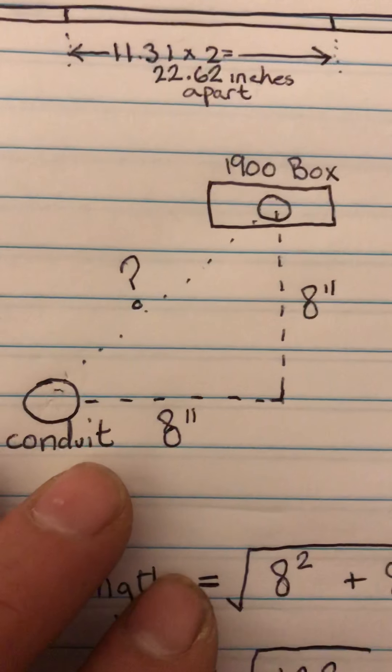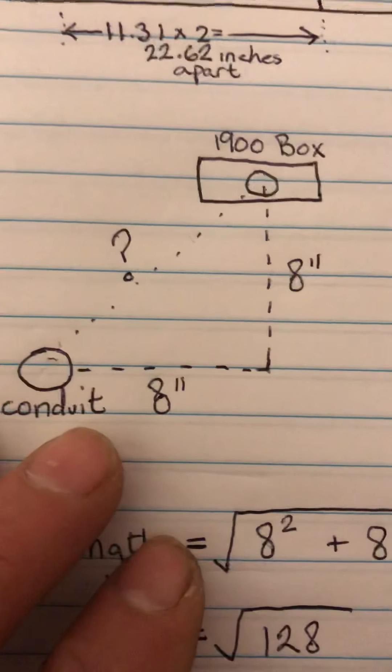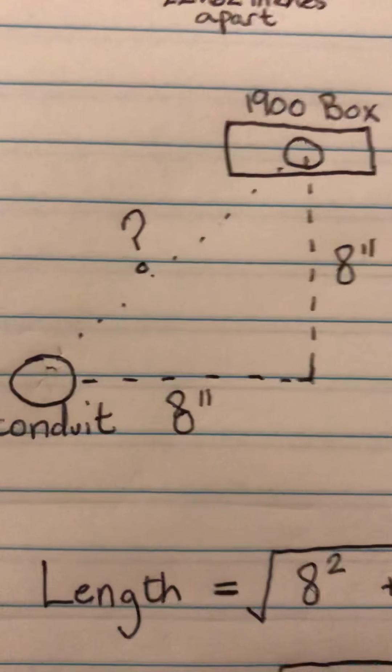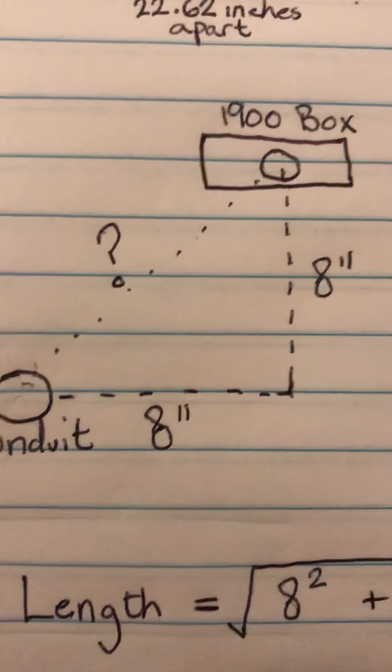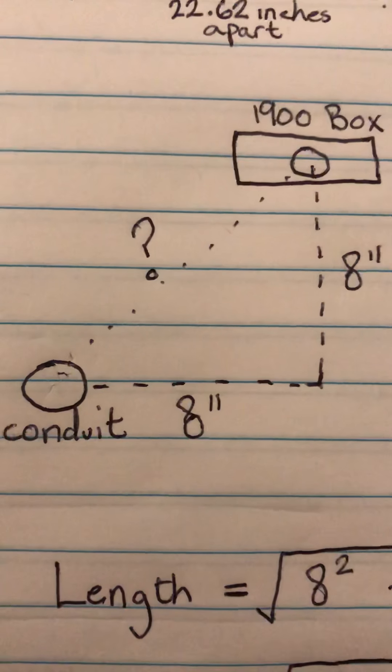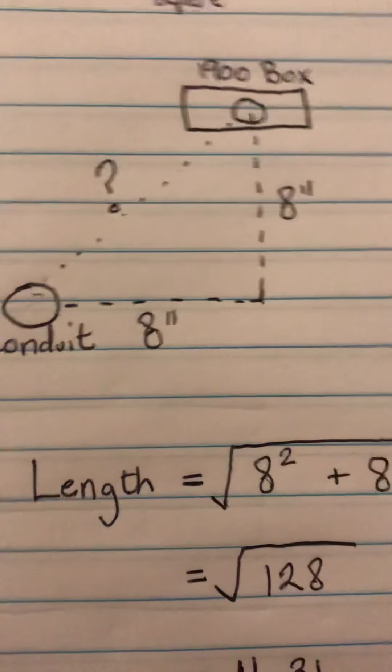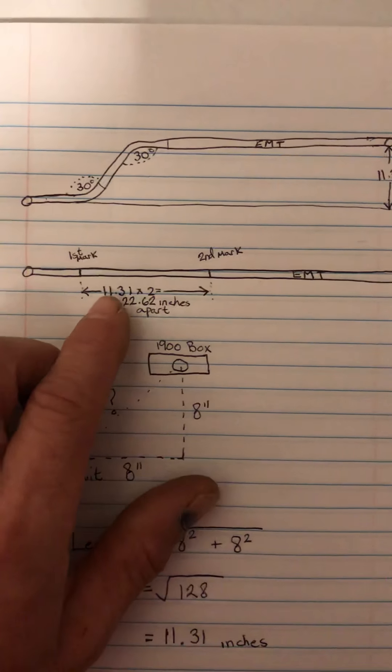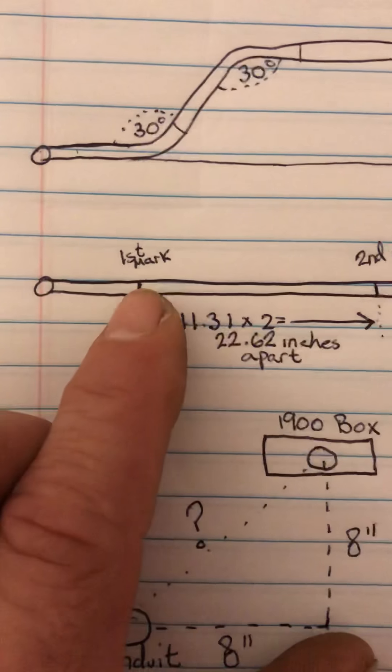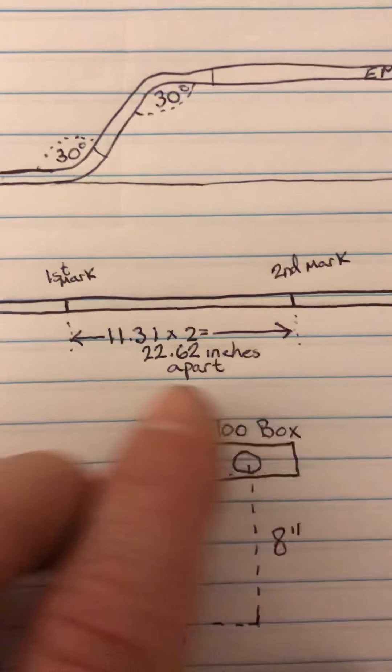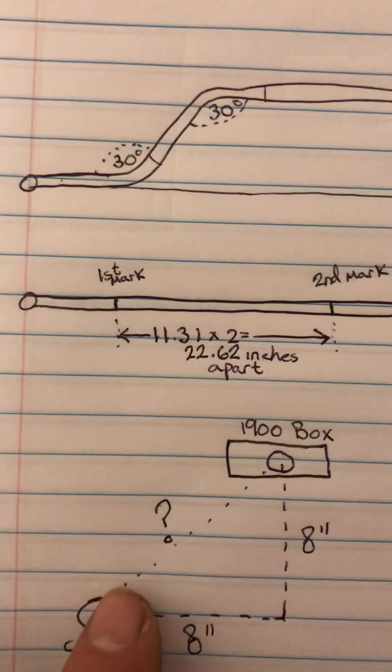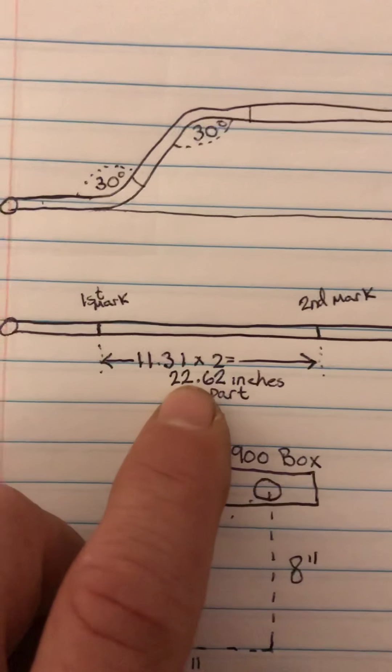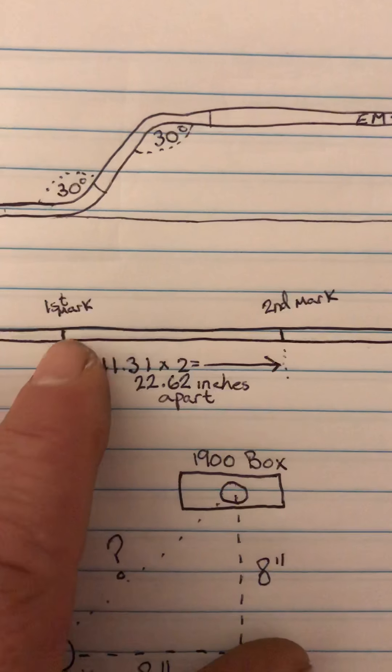Now that we've determined that, let's say we decide to go with a common angle to bend our offset on - 30 degrees. We're going to do a 30-degree offset from this conduit to this box. With a 30-degree offset, our first mark and second mark have to be multiplied by two. We take the hypotenuse, 11.31 inches, and multiply that by two, which gives us 22.62 inches apart for these marks.